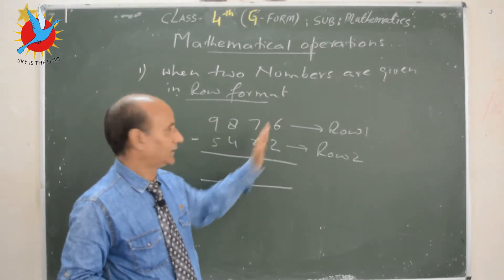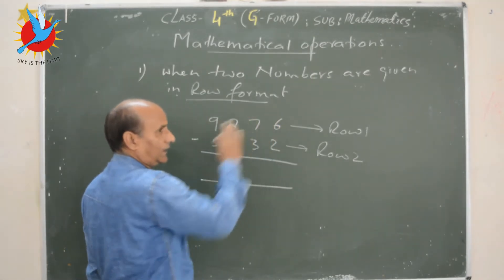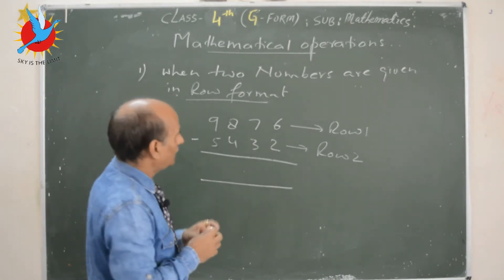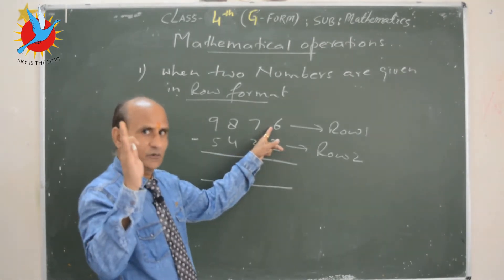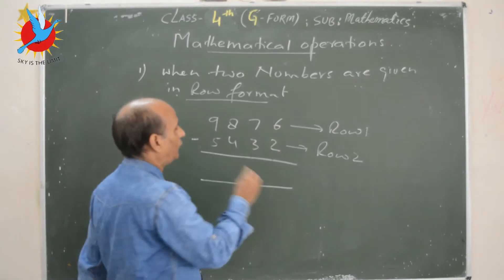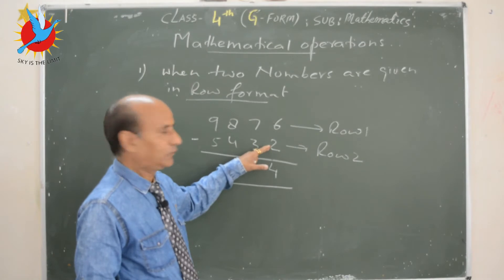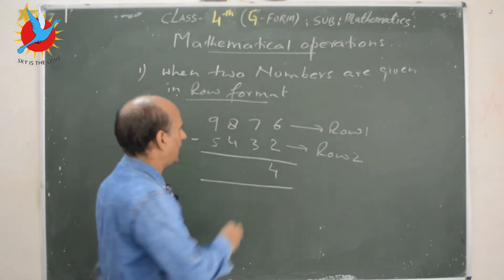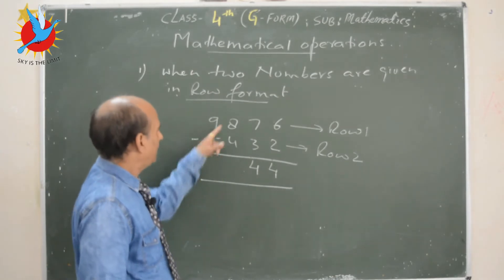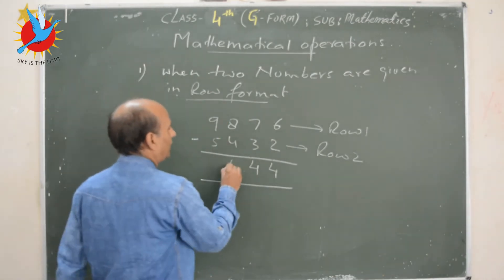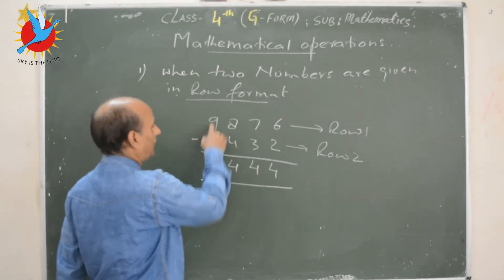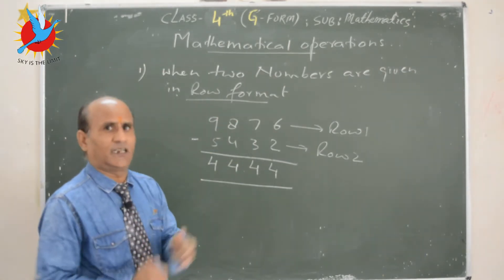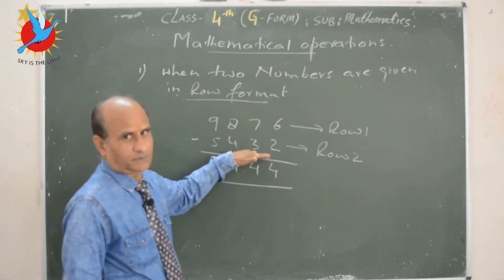In subtraction, the operation always starts from the right-hand side. Taking a simple example: 6 minus 2, you can count or cross out — 6 numbers, cross 2, how much is left? 4. Similarly, 7 minus 3 is 4, 8 minus 4 is 4, and 9 minus 5 is 4. This is the simplest method when numbers are in this format — you subtract column wise from top to bottom.